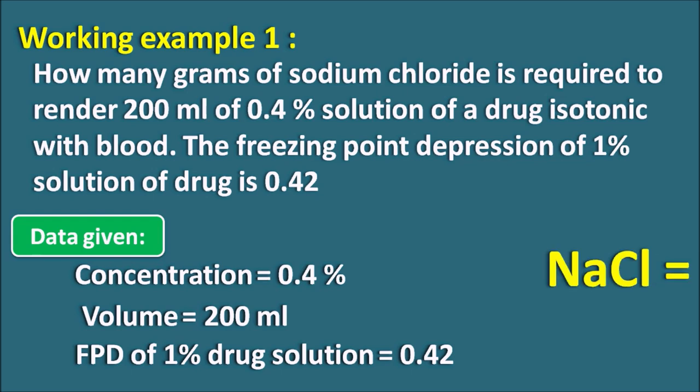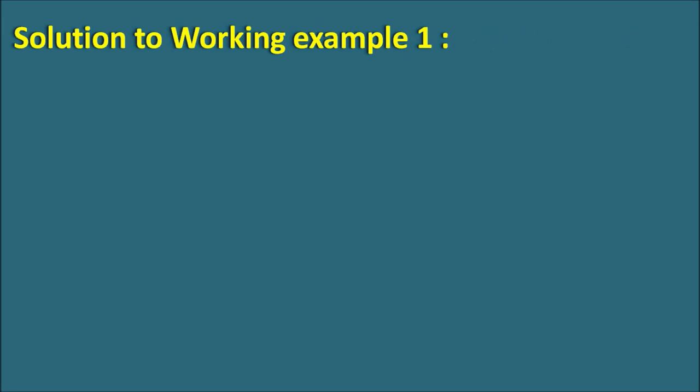We need to find how much sodium chloride is required to adjust the isotonicity. Remember that the concentration of the drug solution in the sample is not 1%, it is 0.4%. But the freezing point depression value given is for the 1% solution, which equals 0.42. Using this data we have to calculate the weight of sodium chloride required. Let us go with the solution to this working example.